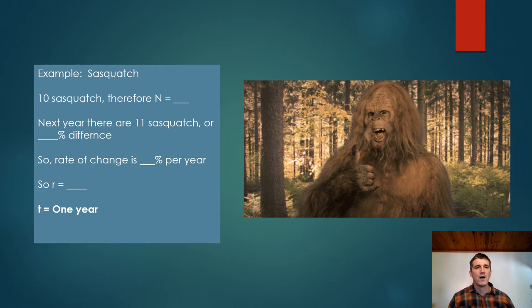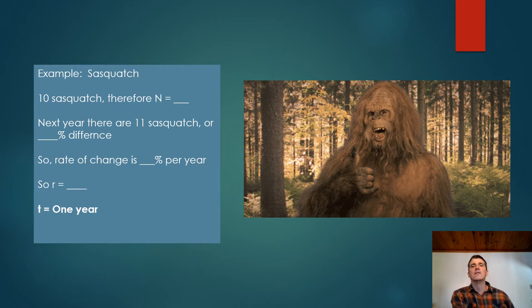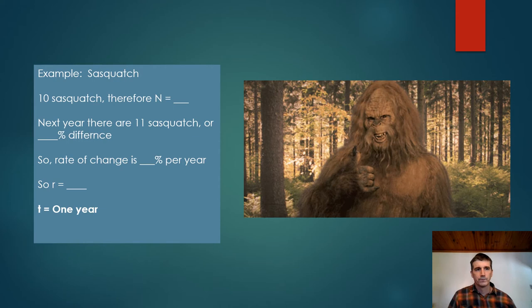And T is one year. Since we're talking about 10 Sasquatches one year, next year 11 Sasquatches. So T equals one year. So if we're going from 10 to 11, that is a growth rate or R of 1.1. Hopefully that makes sense. If it doesn't, then pause this for a moment and make sure that you understand this concept before moving on.